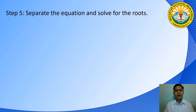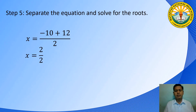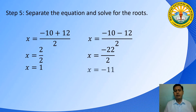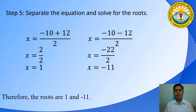Step 5: separate the equation and solve for the roots. First equation: X equals negative 10 plus 12 all over 2. Negative 10 plus 12 is 2; 2 over 2 is 1. Second equation: X equals negative 10 minus 12 all over 2. Negative 10 minus 12 is negative 22; negative 22 over 2 is negative 11. Therefore, the values of the roots are 1 and negative 11.